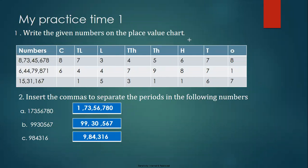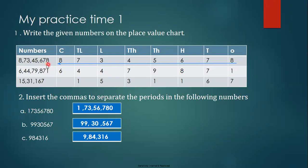How will you place the number? From ones, tens, hundreds, thousands, ten thousands, lakhs, ten lakhs, and crore. So when you place it, it goes from ones to crore, from right to left.